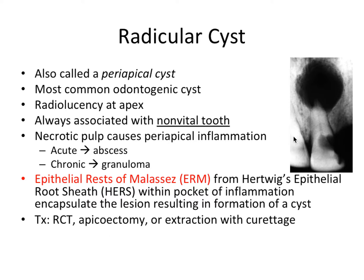It's always associated with a non-vital tooth. A non-vital tooth has a necrotic pulp, which causes periapical inflammation — you can see this giant cavity here. Bacteria have a quick way to access the nutritious pulp, travel down, secrete bacterial byproducts, and cause inflammation at the apex. Acute inflammation would result more in an abscess, whereas chronic inflammation would result more in a granuloma, where the body mounts a response involving granulation tissue.